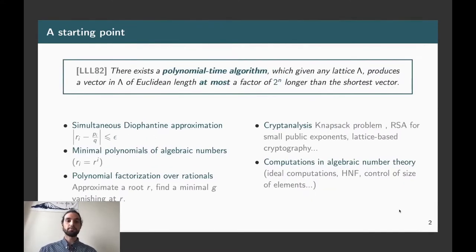However, in 82, Lenstra, Lenstra and Lovasz proved that there exists a polynomial time algorithm which given any lattice can produce a vector of the lattice which is of length at most 2 to the N longer than the shortest vector. So the problem is hard for sure, but you have polynomial time approximation of the shortest vector.